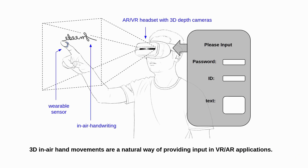3D in-air hand movements are a natural way of providing input in virtual reality and augmented reality applications. For example, in this scenario, a user can write something in the air as input information like a password, an ID, or a short piece of text such as a tweet.